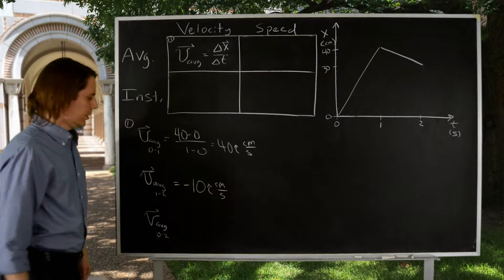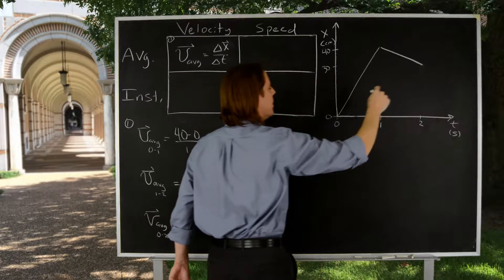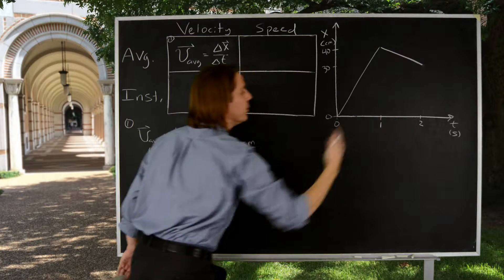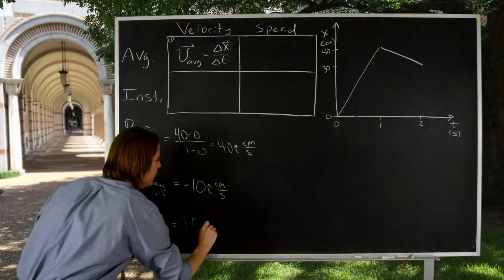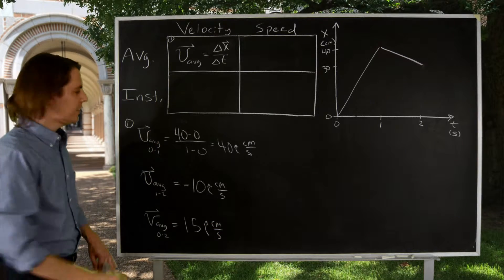And then finally, we could do the average velocity from the entire interval, zero to two. Final minus initial, 30 minus zero, that's 30. The interval is 2. 30 over 2 is 15 i hat centimeters per second. So that's average velocity.